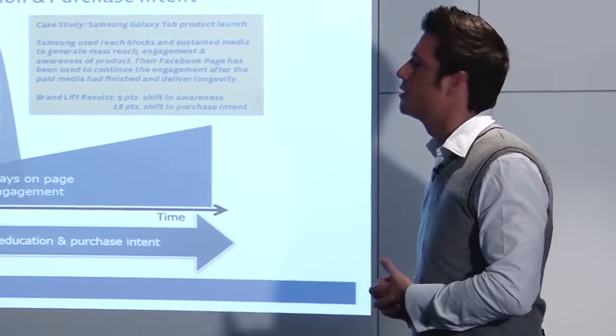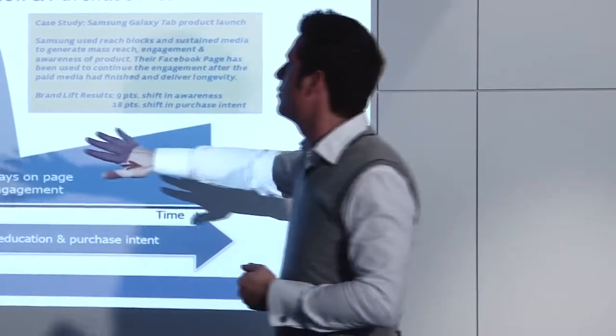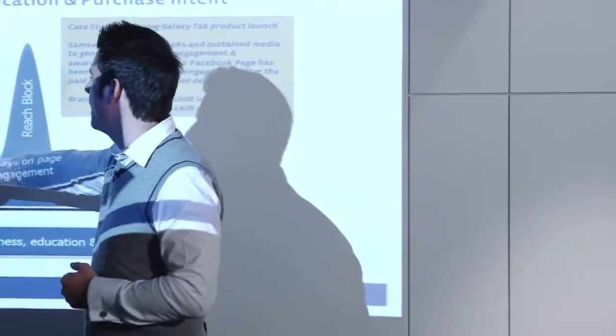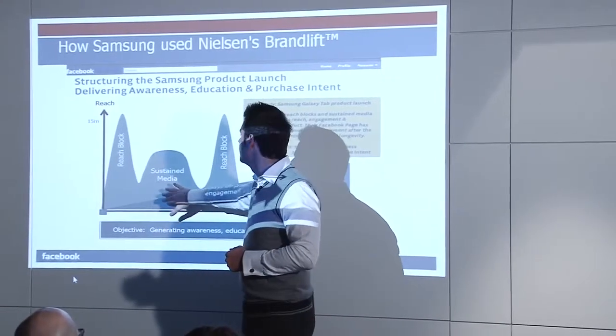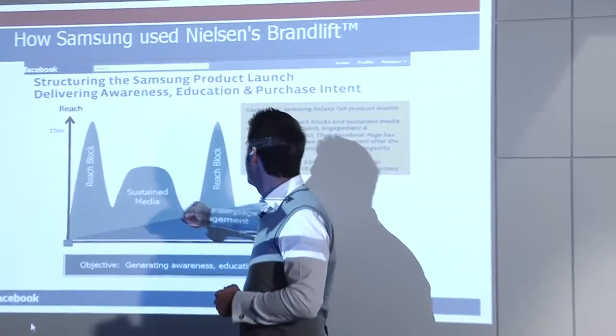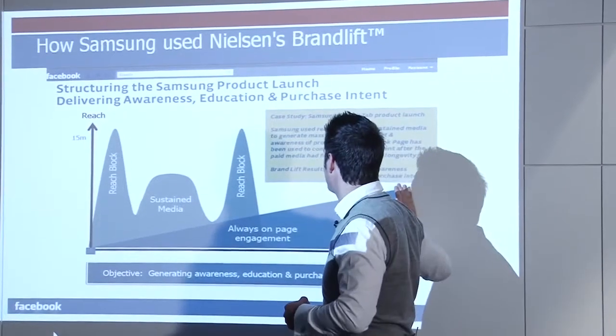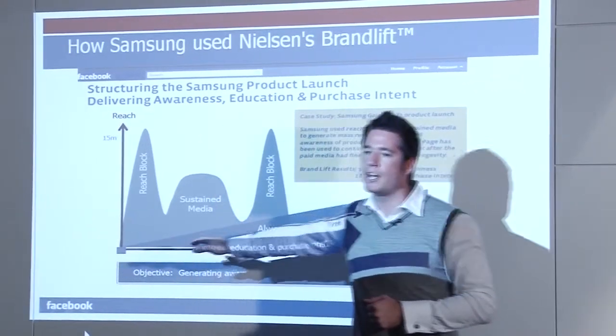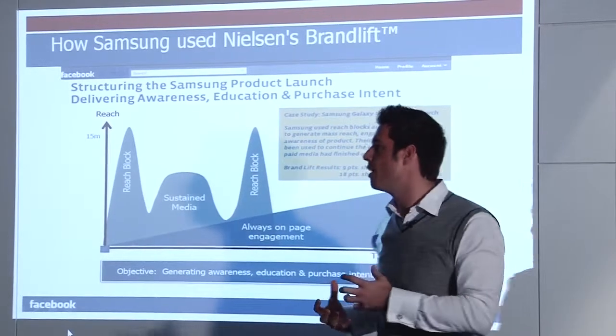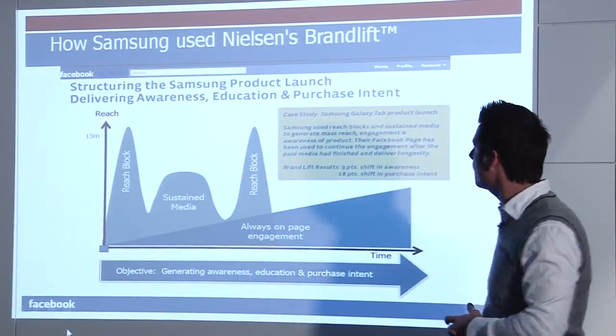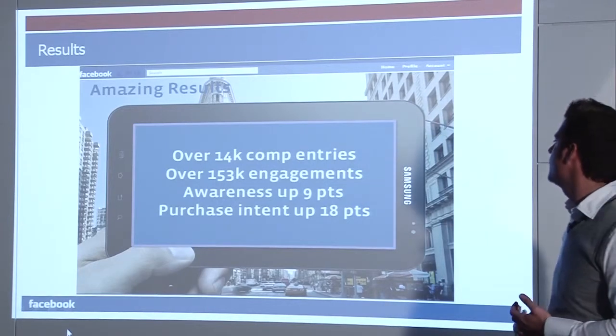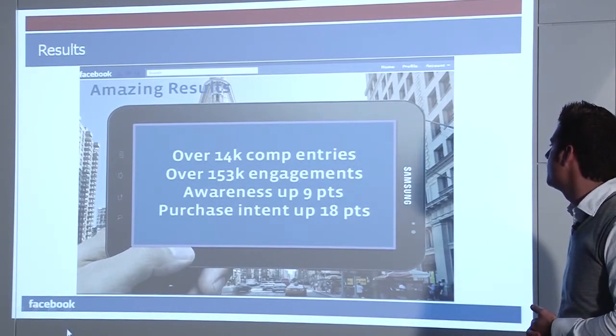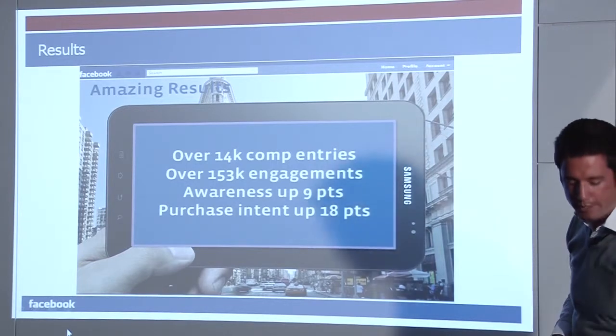With the Samsung Nielsen brand lift study, they actually started off with the reach block. They did sustained media. Another word for sustained media is engagement ads or home page ads. They finished off with the reach block, but had an always on strategy, which is a combination of marketplace ads as well as engagement ads. There were about 153,000 engagements, awareness up about nine points, and purchase intents by up to 18 points.